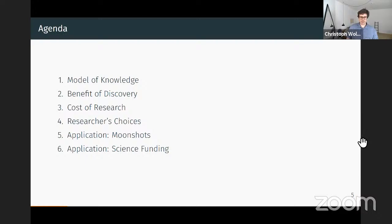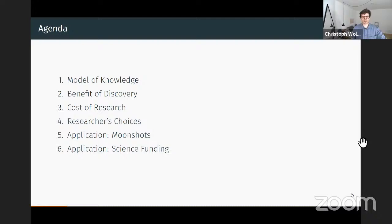Let me outline the plan of the presentation. We eventually want to talk about the researchers' problem. First, I'll introduce our model of knowledge and how we think about knowledge. Then we will characterize the researcher's objective: we'll compute the benefit of the discovery, describe the search process from which we derive the cost function, then put everything together and characterize the researcher's optimal choices, which we use to study the applications.